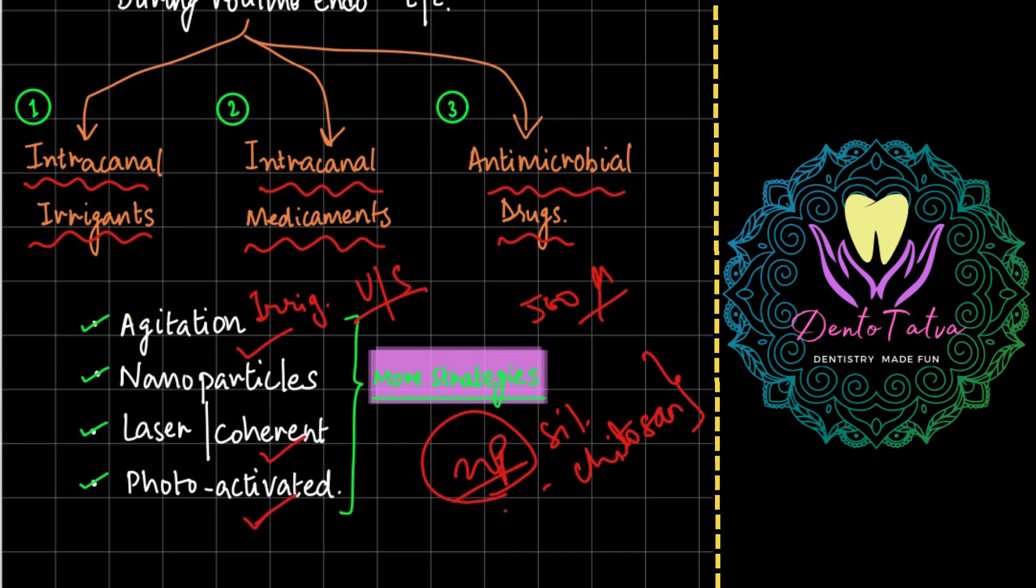Under intracanal irrigants, sodium hypochlorite is the most commonly used with your demineralizing agent. Sodium hypochlorite is proteolytic, EDTA is your demineralizing agent. These two have to be used together so that one takes care of the organic and one takes care of the inorganic part. But all of this is not really effective against your retreatment cases wherein there is presence of E. faecalis biofilm.